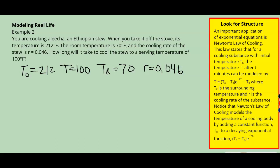We take the numbers given and plug them into Newton's Law of Cooling. The equation is T equals T sub 0 times e to the negative R times t, plus T sub R. Substituting in, we have T equals 100, T sub 0 is 212, R is 0.046, and T sub R is 70. We'll fill in the given information into the formula and then simplify.